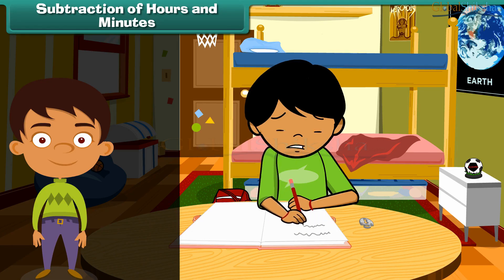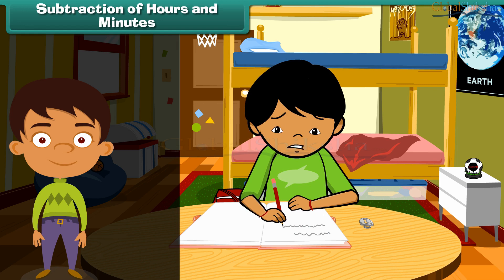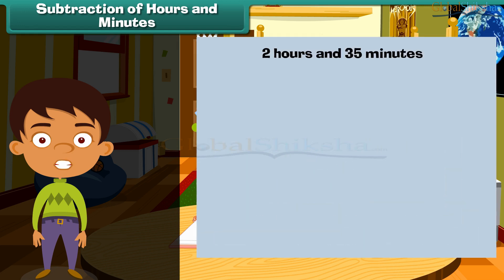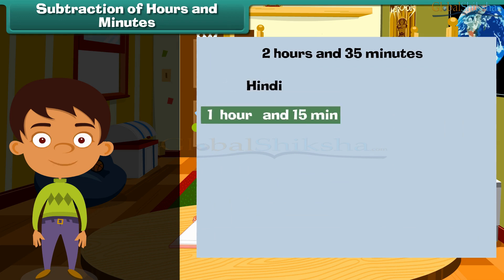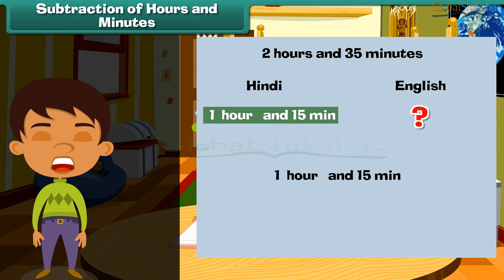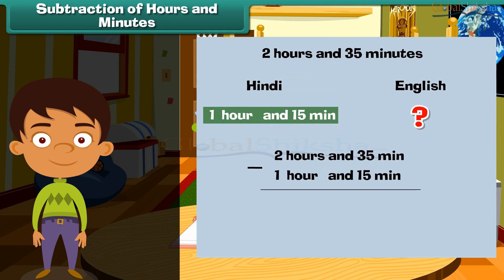Subtraction of hours and minutes. Latika completed her English and Hindi homework in 2 hours and 35 minutes. Hindi homework was over in 1 hour 15 minutes. How much time did Latika take to complete her English homework? Subtract the time taken for Hindi homework from the total time taken for Hindi and English homework.